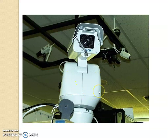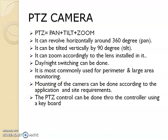Literally this camera covers each and every part of the space around it, so there won't be any blind spots. It can revolve horizontally around 360 degrees — that is called Pan. It can be tilted vertically by 90 degrees — that is called Tilt. The third feature, Zoom, depends on the lens installed which can zoom in or zoom out. Day and night switching can also be done. It is most commonly used in perimeter and large area monitoring. Mounting can be done according to application requirements, and PTZ can be controlled remotely from a computer.